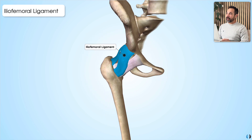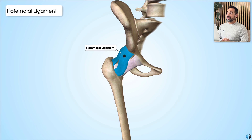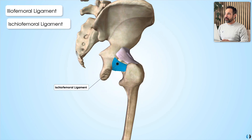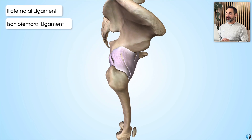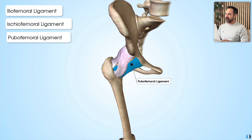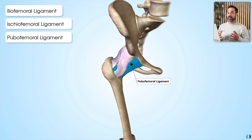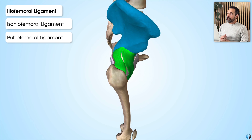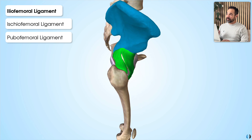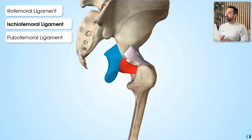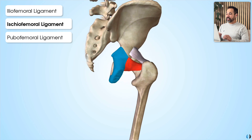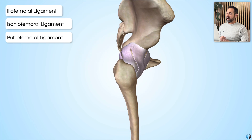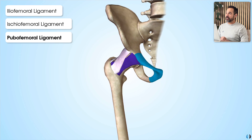These are the iliofemoral ligament, the ischiofemoral ligament, and finally the pubofemoral ligament. These ligaments are really easy to remember because their name effectively tells us their location. The iliofemoral ligament connects the ilium to the femur, the ischiofemoral ligament connects the ischium to the femur, and the pubofemoral ligament connects the pubis to the femur.